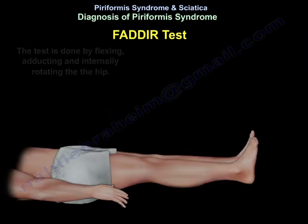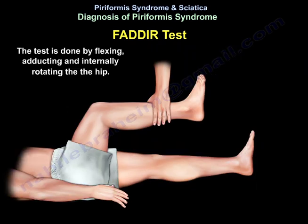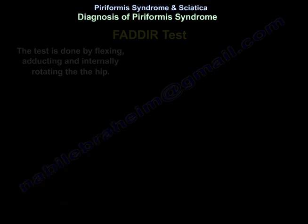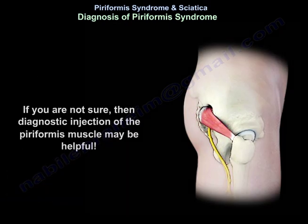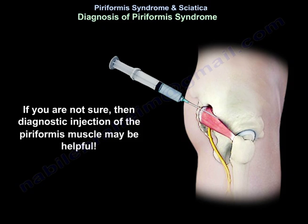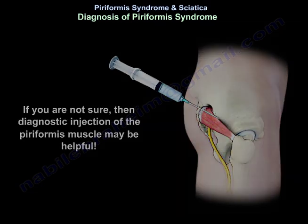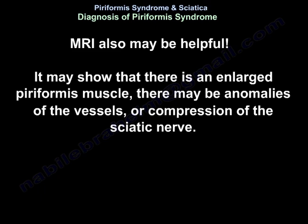The FAIR test is done by flexing, adducting, and internally rotating the hip. If you are not sure, a diagnostic injection of the piriformis may be helpful. An MRI also may be helpful — it may show there is an enlarged piriformis muscle, or there might be anomalies of the vessels or compression of the sciatic nerve.